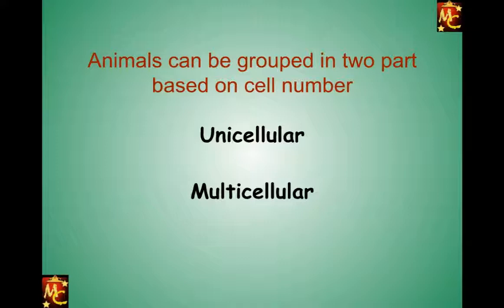We can simply categorize living organisms into two parts based on number of cells. First, unicellular — meaning they have only one cell, and the whole body is made up of one cell; many bacteria are examples. Second, multicellular organisms — the body has many, many cells; for example, humans, whose body has many, many cells.